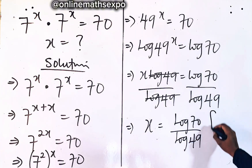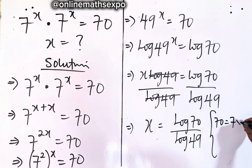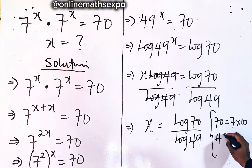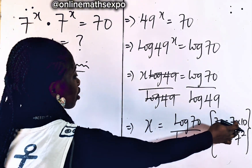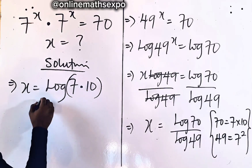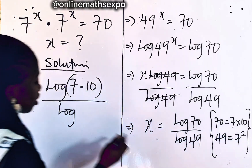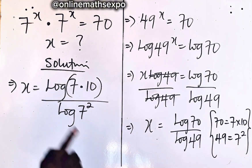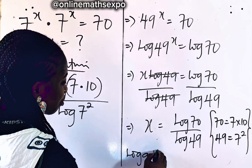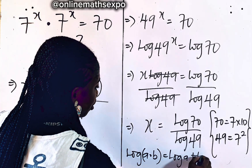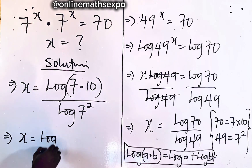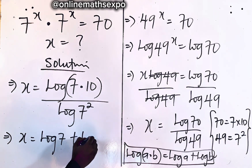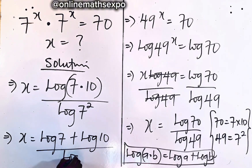We know that 70 is the same as 7 multiplied by 10, and 49, as we've seen, is the same as 7 squared. So we can write x is equal to log of 7 times 10, divided by log of 7 squared. Now remember, for every log of a multiplied by b, it's always log a plus log b. Applying this, we have the numerator become log 7 plus log 10, divided by log of 7 squared.